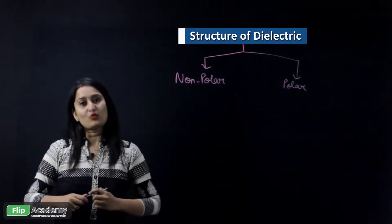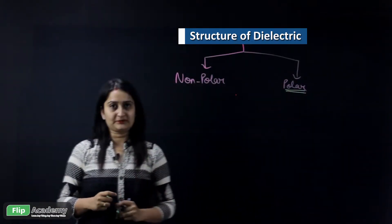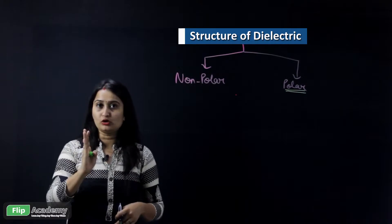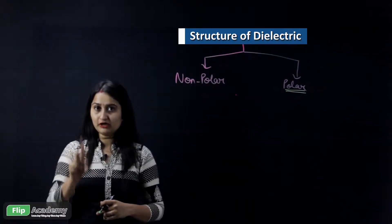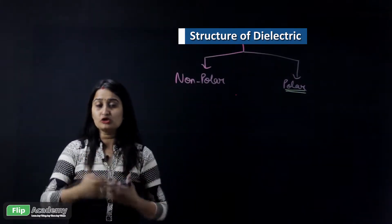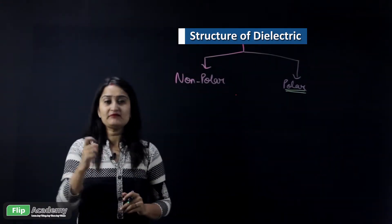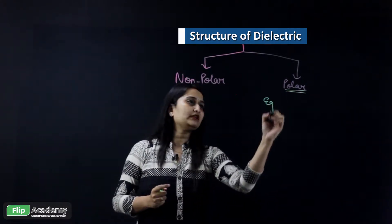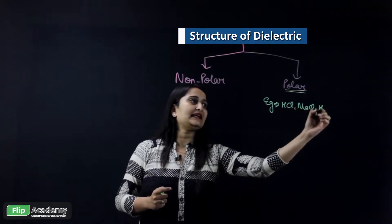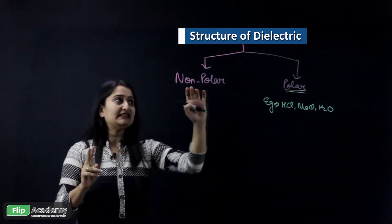Let's first understand polar dielectric. As the name suggests, 'polar' represents poles — meaning positive and negative ends. When a positive and negative end form poles, we are talking about a dipole. Examples of polar dielectrics include HCl, NaCl, and water. These all come under the polar dielectric category.